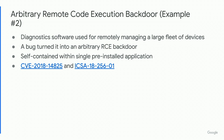Now we have another example of arbitrary remote code execution, and this one looked very different from the first because it was self-contained wholly within a single pre-installed application. Its purpose was diagnostic software for remotely managing a large fleet of devices — not a normal Android mobile phone, but used in enterprise, factory, and industrial control system environments. As soon as we reported it to the OEM, they filed for a CVE and there was an ICS advisory from US-CERT that went out.